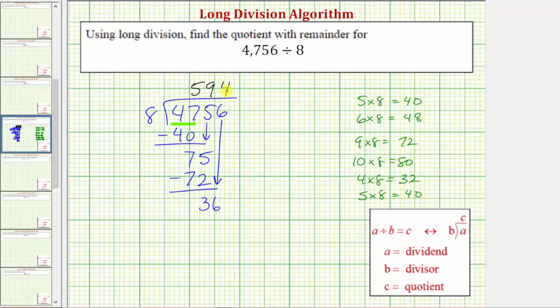Multiply by the divisor. 4 times 8 is 32. And we subtract 36 minus 32 is 4. Again, notice how the difference is less than the divisor, which verifies the 4 is correct.